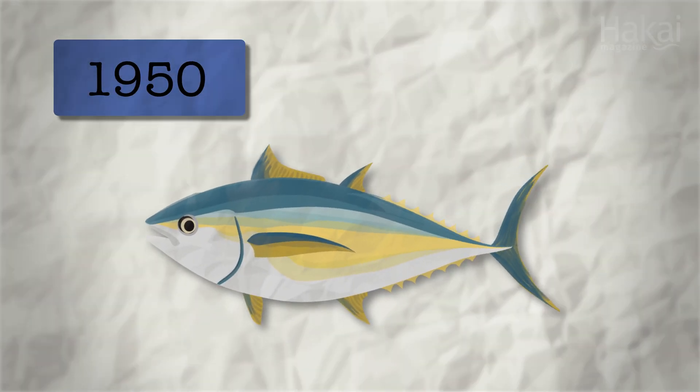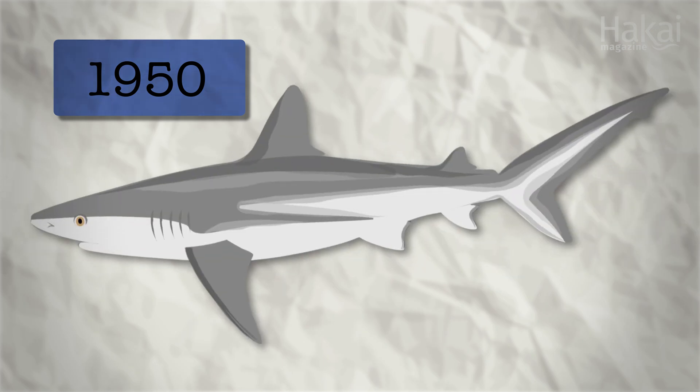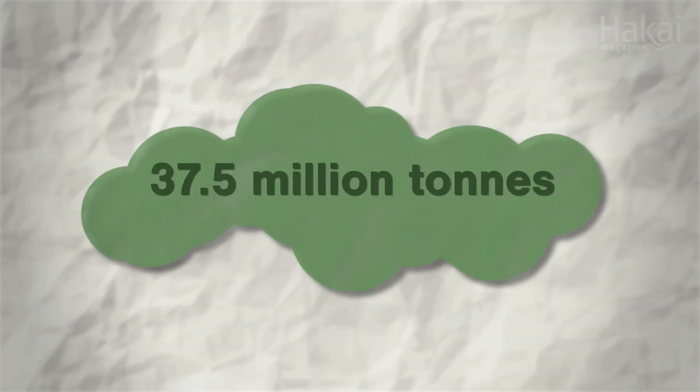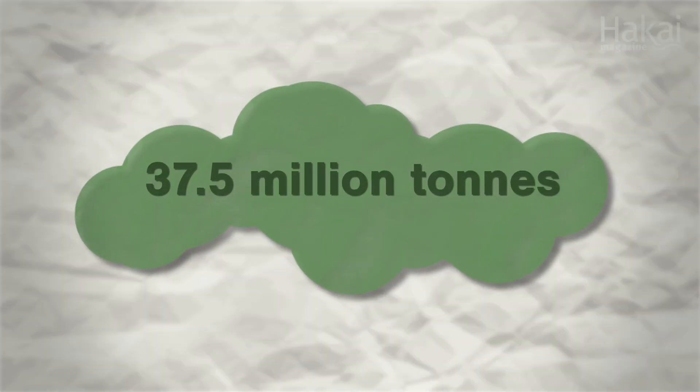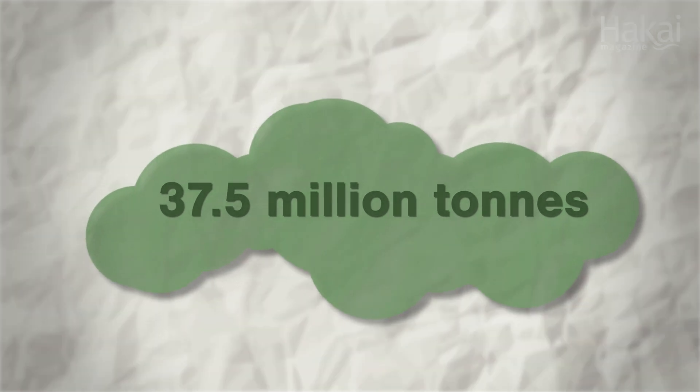our take of big fish like tuna, mackerel, sharks and billfish has released approximately 37.5 million metric tons of carbon into the atmosphere.